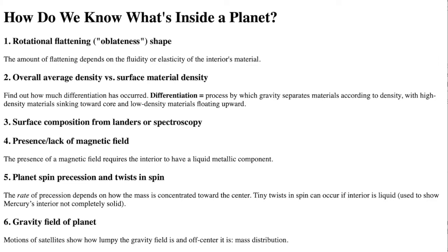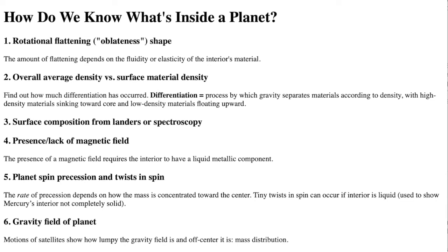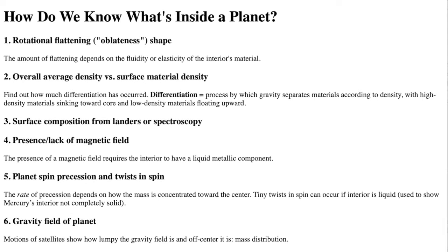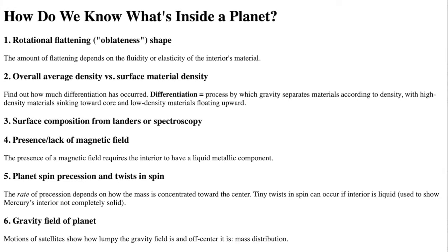The planets have flattened spherical shapes from the action of gravity and the centrifugal effect of their rotation. The amount of the rotational flattening is the oblateness. The amount of flattening also depends on the fluidity or elasticity of the interior's material.